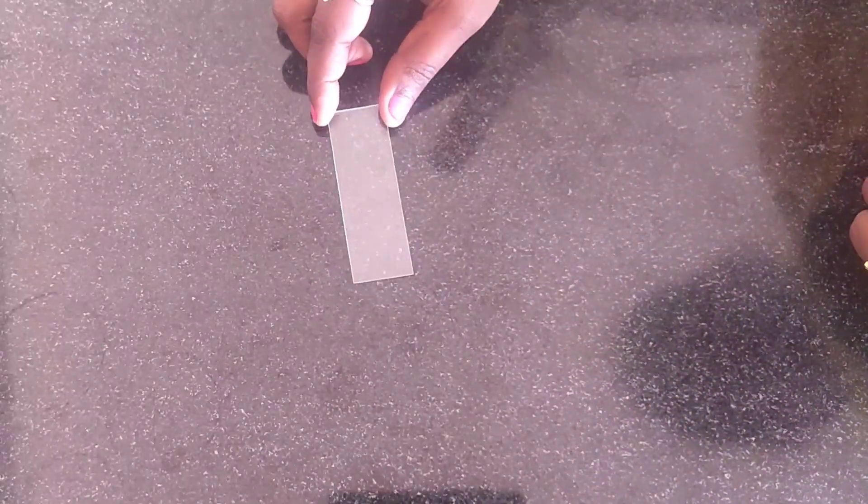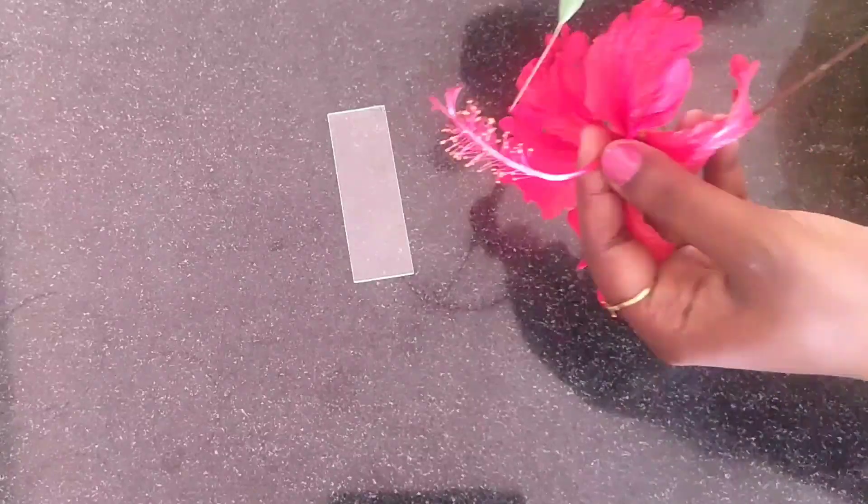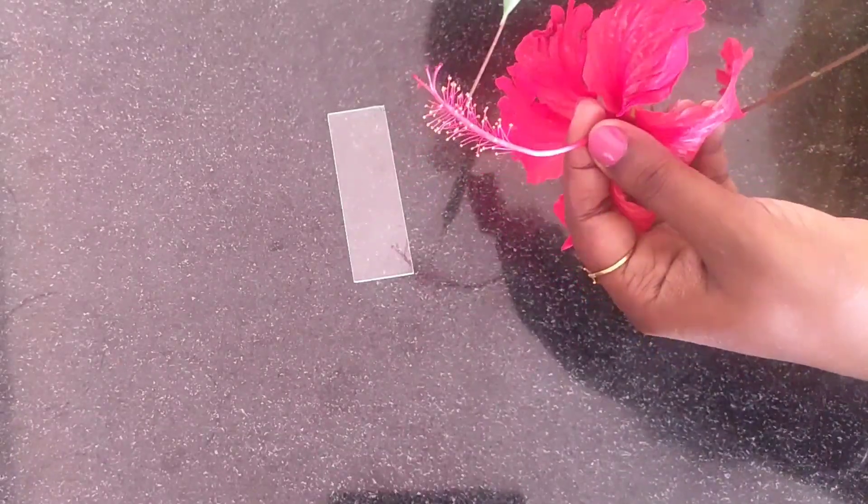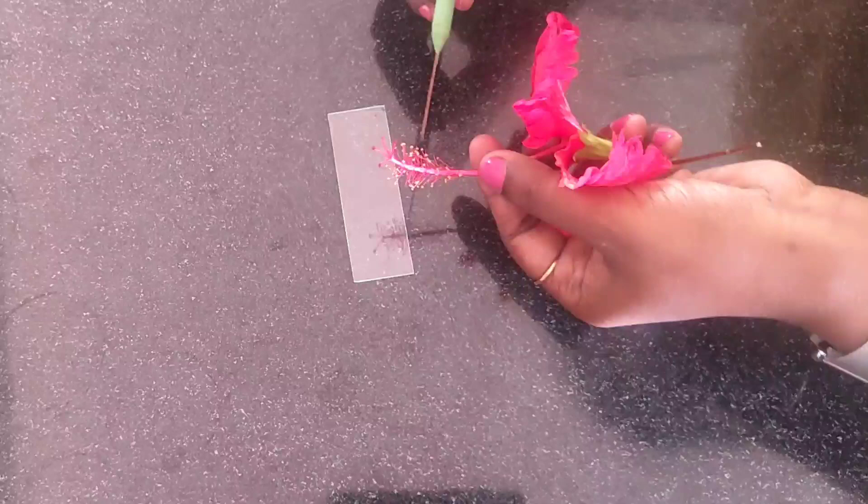Now let us see the procedure. We need to take a clean slide. Now we have to dust the pollen grains. Here on the tip of this yellow color region you can find the pollen grains. Now we need to dust these pollen grains onto the slide.